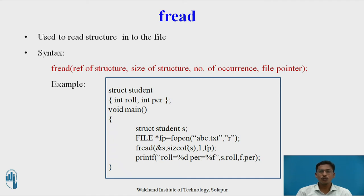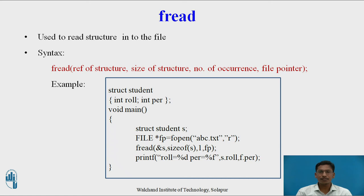The next function is fread, used for reading a structure from the file. fread also accepts four parameters: reference of structure, size of structure, number of occurrences, and file pointer. Usage: fread(&s, sizeof(s), 1, fp). This reads one structure student s from the file and stores it in s. After reading, the roll number and percentage are printed.